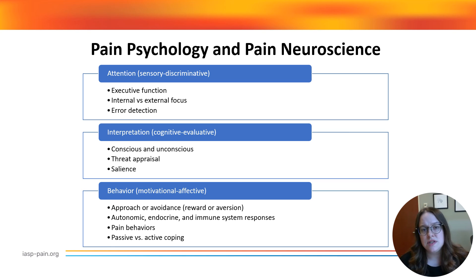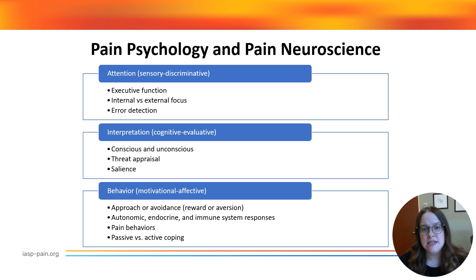Over time, changes in behavior, mood, and cognition are associated with changes in brain activity, volume, and connectivity in some of the areas described. I will go into more detail about pain psychology tools in part two.